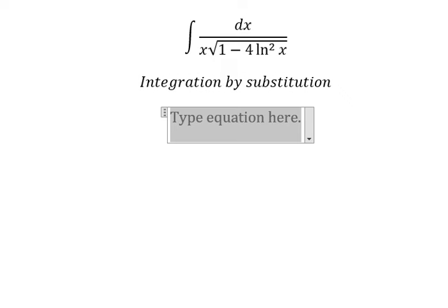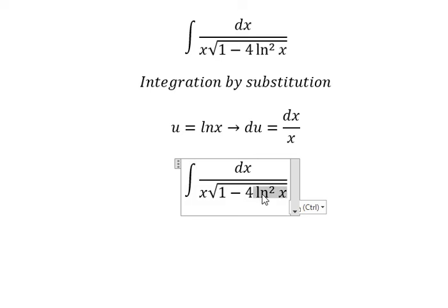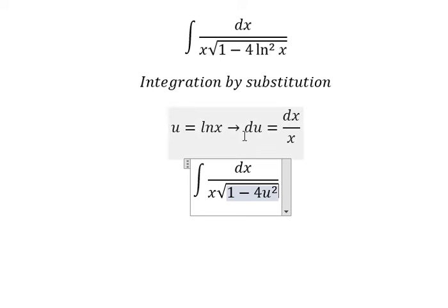So we put u equals ln x, du equals dx over x. This one we change for u², and dx over x we change for du.